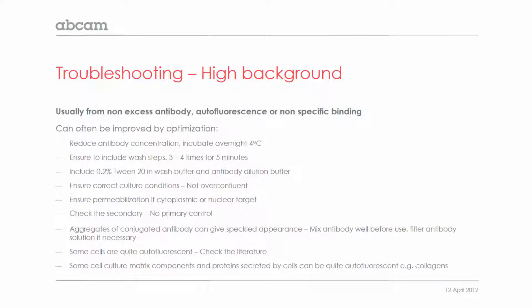Sometimes aggregates of the conjugated secondary antibody can give a speckled appearance within the sample. You can mix the antibody well before use, or even filter the antibody solution before use if necessary. Some cells are quite autofluorescent — check the literature for this. They may also be autofluorescent only at a certain wavelength, so choosing a different conjugate and viewing at a different wavelength may correct that problem. Some cell culture matrix components and proteins can also be quite autofluorescent, and again, changing the conjugate to view at a different wavelength may help.